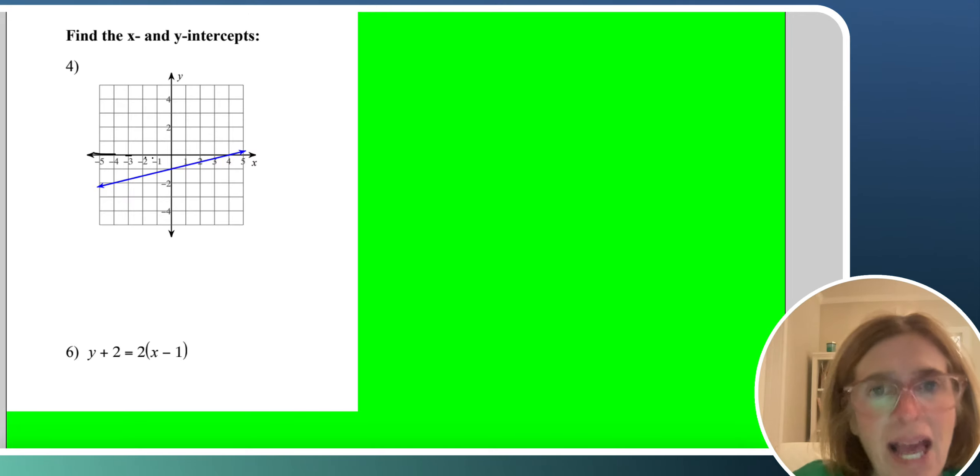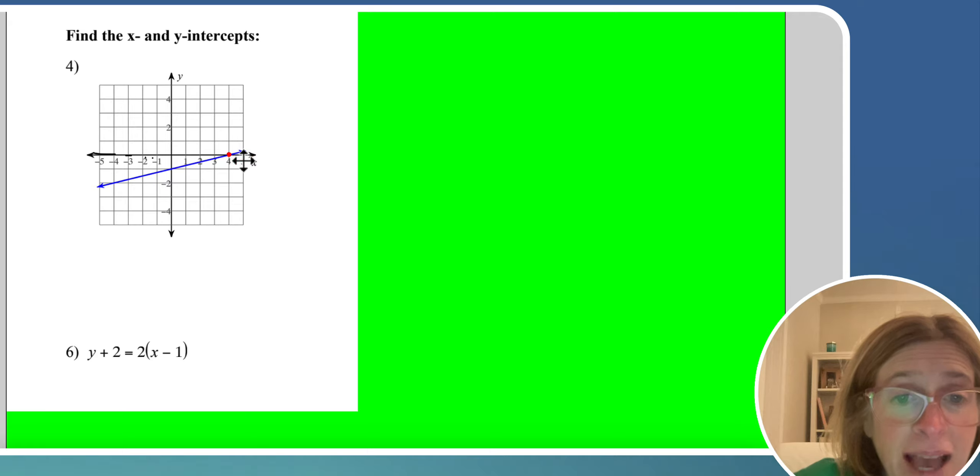And then you have ordered pairs that have an x and y in them. But x and y intercepts are actually really special points. They're the points that lay right on top of the x axis, so right here, and the y axis right here.